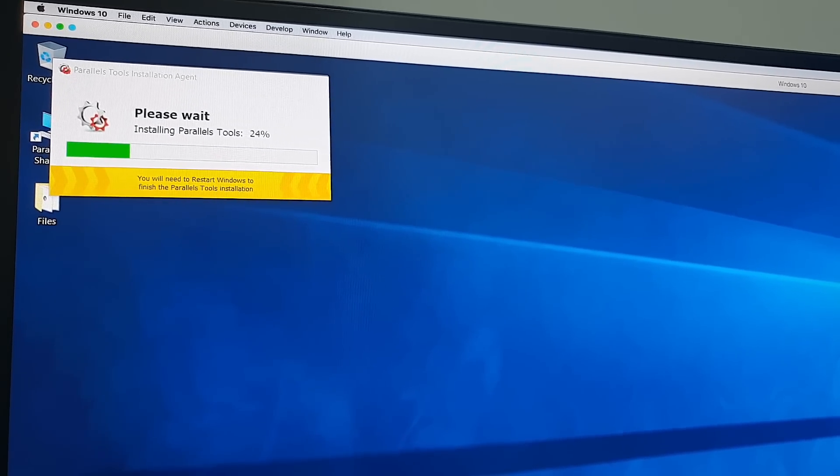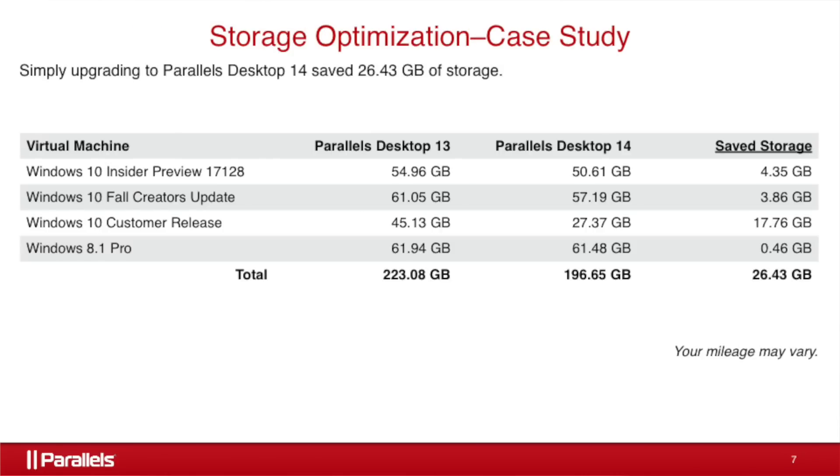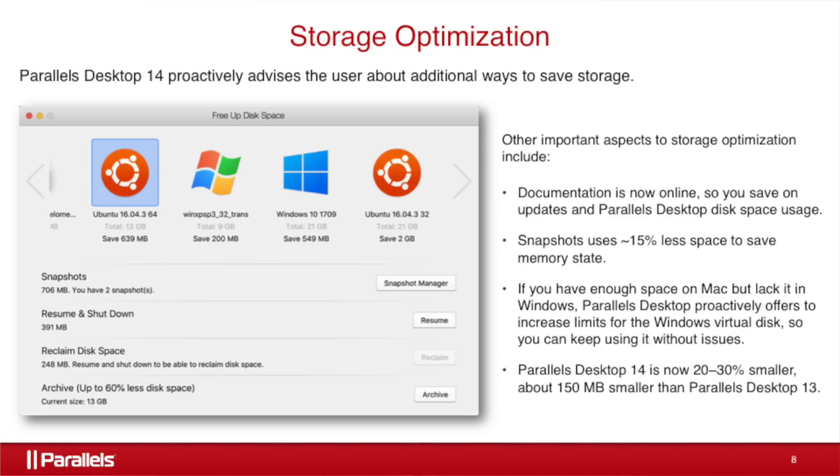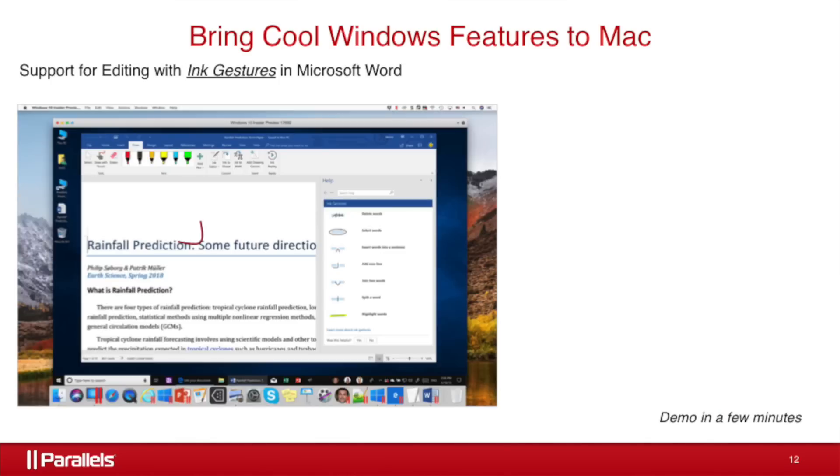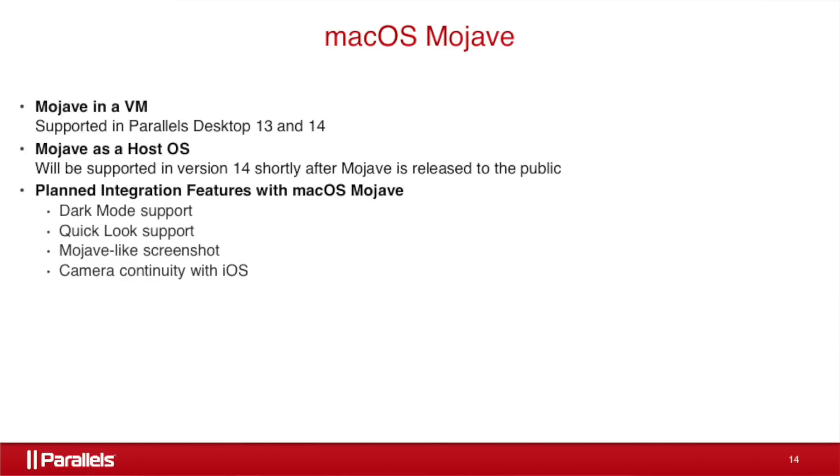With Parallels 14, their biggest focus was hard drive optimization, graphics improvements, app-specific Touch Bar support, and support for the latest macOS Mojave. Personally, I didn't experience any improvements in the size of my virtual machine — they stated I was going to save around 20 gigabytes, but I already run an optimized system: I delete files regularly, compact the space, and don't have snapshots. So your mileage may vary.